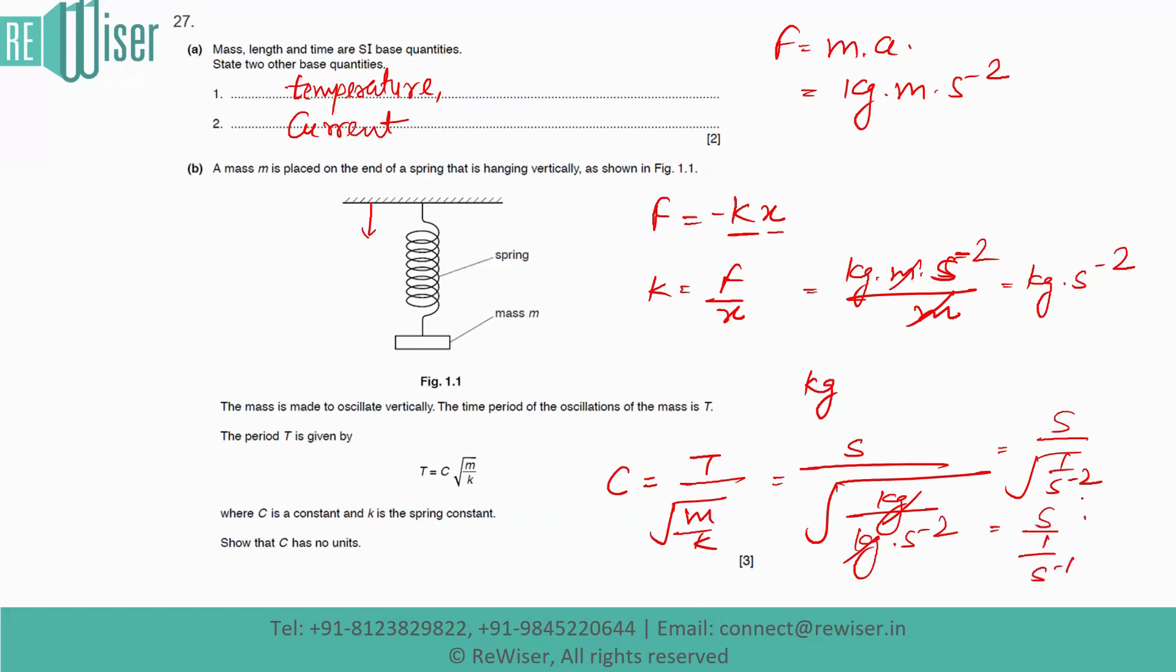So we will flip it over. So that can be written as, if you write here, C will be s × s⁻¹. So it will be 1. So that means it is a unitless quantity. So it will prove that C has no units.